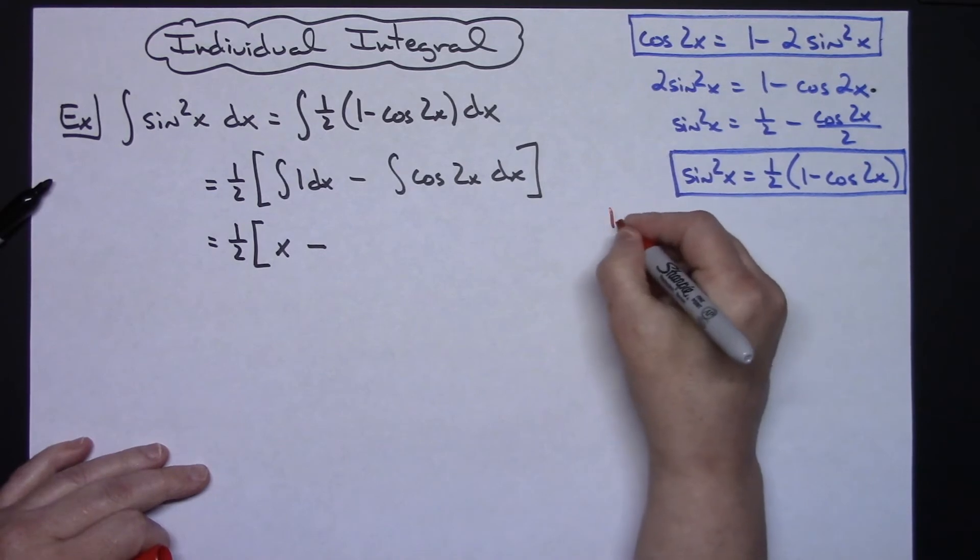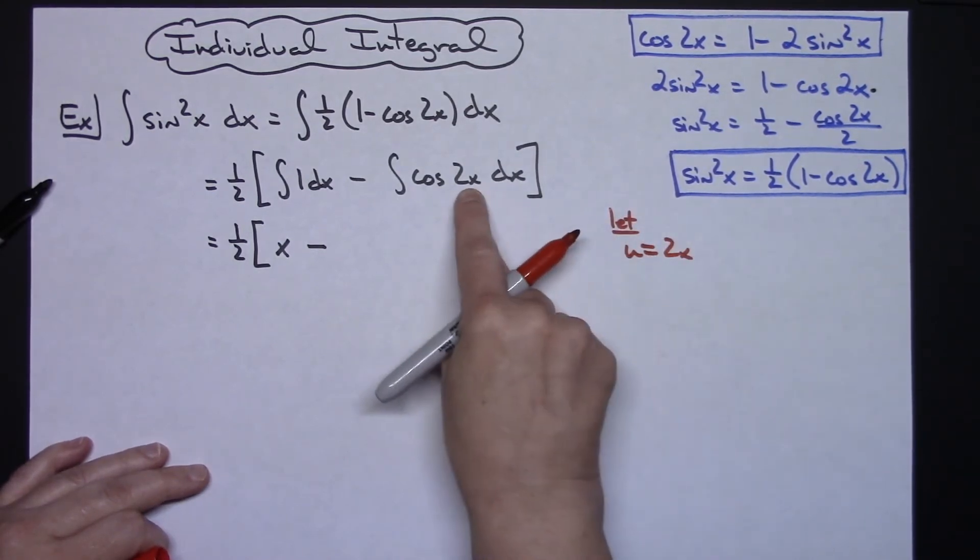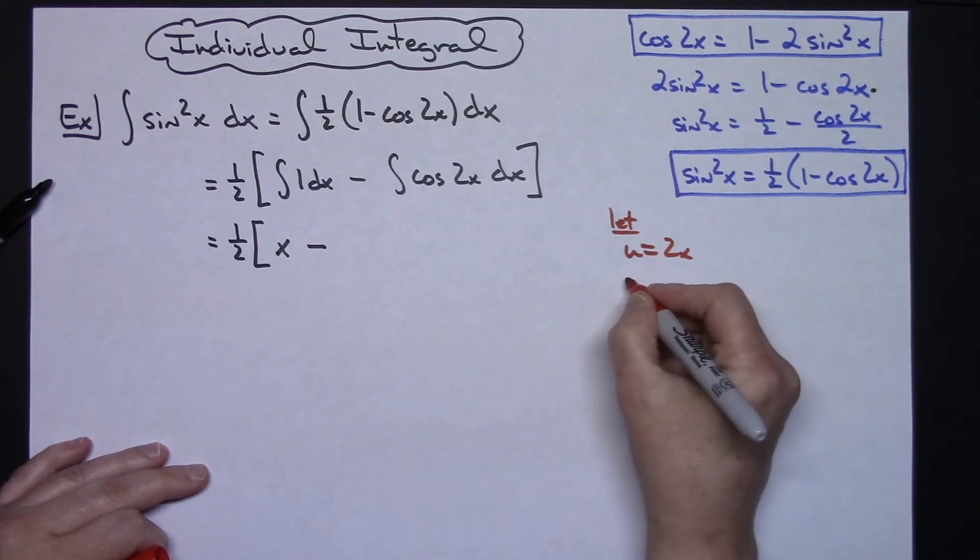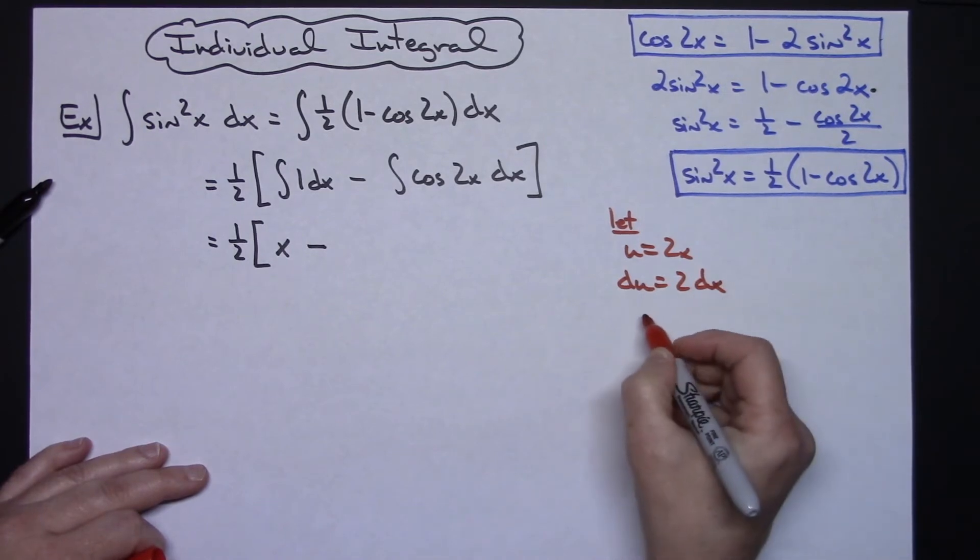So I'm going to let my U equal the 2x, which is the inside there. Taking the derivative of both sides, I'll have a du equals a 2 dx. Dividing both sides by that 2, I'll have a du over 2.